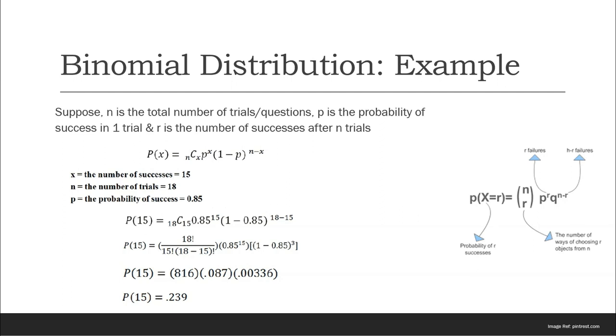Binomial distribution comes under probability where we have exactly two mutually exclusive outcomes for a given trial.